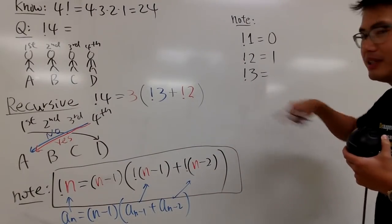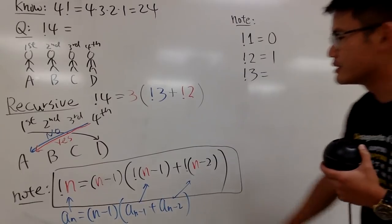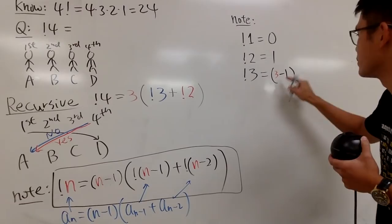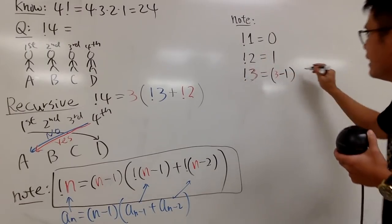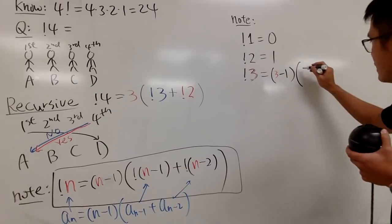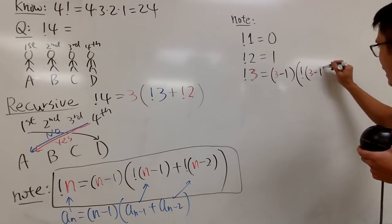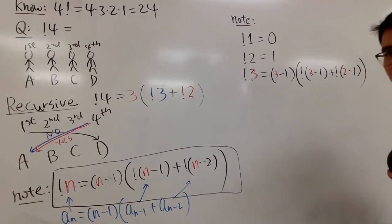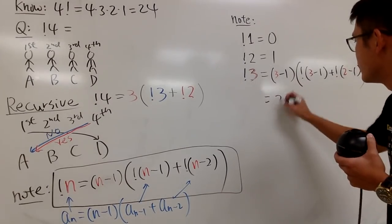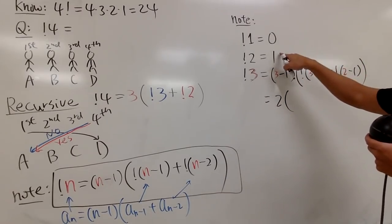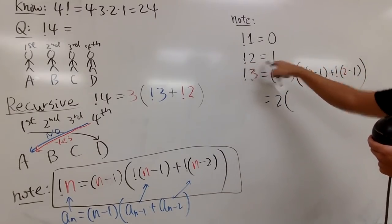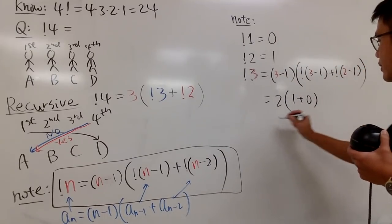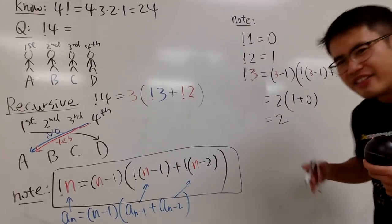So subfactorial 3 is the following. All you have to do is you do 3 minus 1, which is... Let me just write it down. 3 minus 1, which is 2. I know that. Okay, don't worry. I know that. And then you multiply by subfactorial 3 minus 1 plus subfactorial of 2 minus 1, like that. Well, well, this is just 2 times... This right here is the previous one, right? Subfactorial 2, which is 1, plus the previous previous, which is 0, like this. So in other words, you get 2 times 1, which is 2.